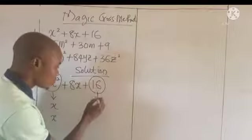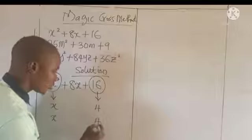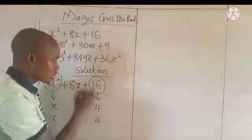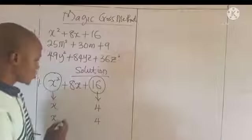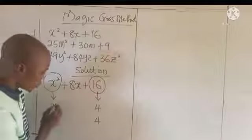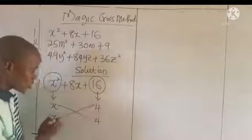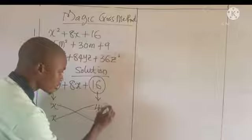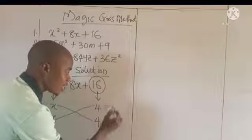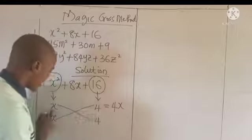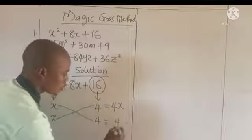Now look at the two factors for the last term: we have 4 and 4, because 4 times 4 gives us 16. Now we use the magic cross — cross multiplication. When we multiply this by this, we get 4x. When we multiply x by 4, we also get 4x.